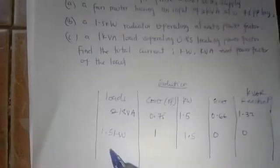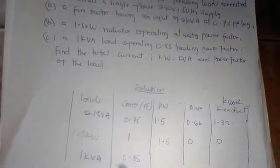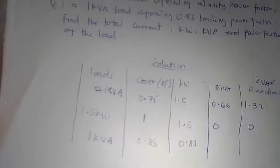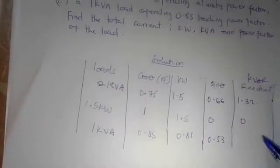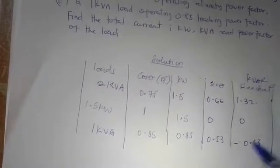Load 3 is 1 KVA operating at 0.85 leading power factor. Because it is leading, the reactive part becomes negative — though the active part is never negative. Active power = 1 × 0.85 = 0.85 KW. For sin θ: cos⁻¹(0.85) gives sin θ = 0.53, so KVAR = 0.53 × 1 = 0.53, but written as −0.53 KVAR because it is leading.